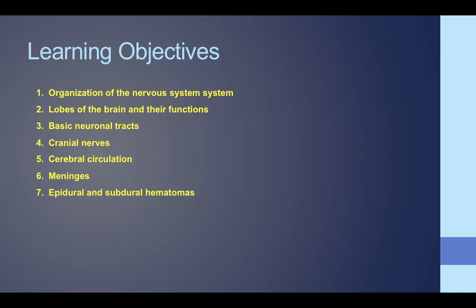Some of the learning objectives: I'm going to talk about the organization of the nervous system, briefly go over the cerebral cortex and their functions, basic neuronal tracts, some cranial nerves, how the brain is perfused by the circle of Willis, the meninges, and a few brain bleeds known as epidural and subdural hematomas.